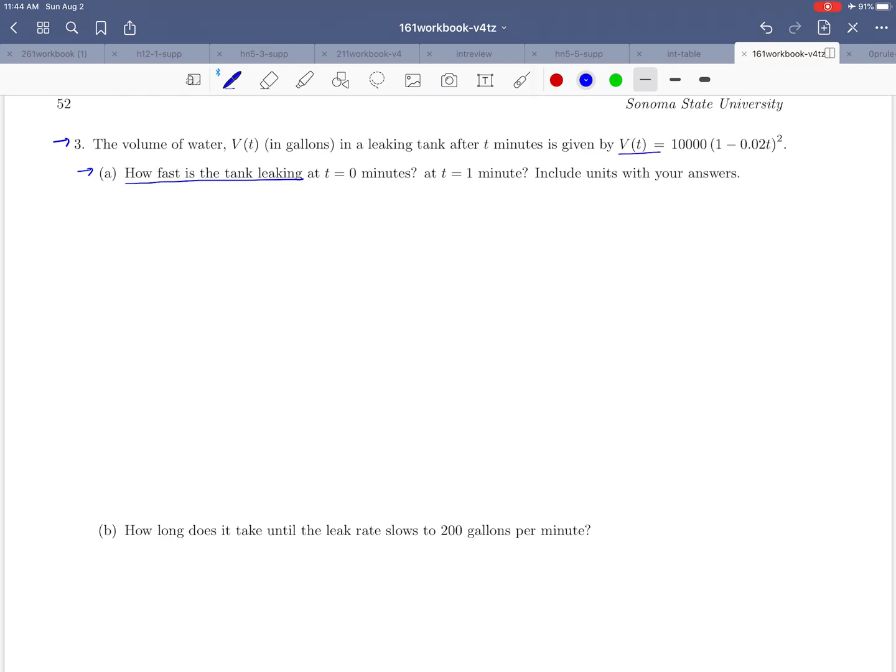If you look back up at the function, which derivative rule or rules do you think would apply to this situation? Notice that we've got a function inside of another function. So this 1 minus 0.02t, you could think of that as your u. That's kind of a nice setup for the chain rule in this case. So let's see if we can use the chain rule to find that derivative.